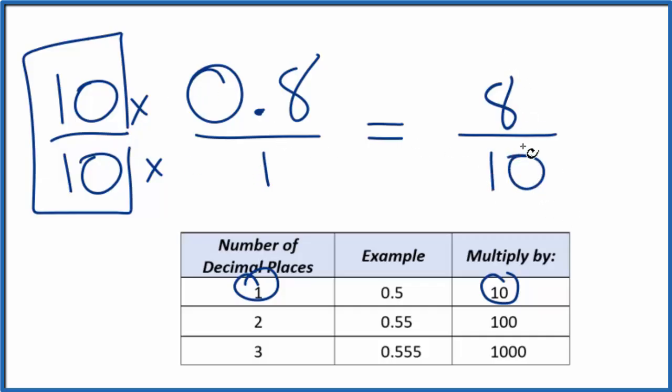And we get 10 times 1 is 10. Now we have our fraction with whole numbers. And 0.8 over 1, it's the same thing as 8 over 10.